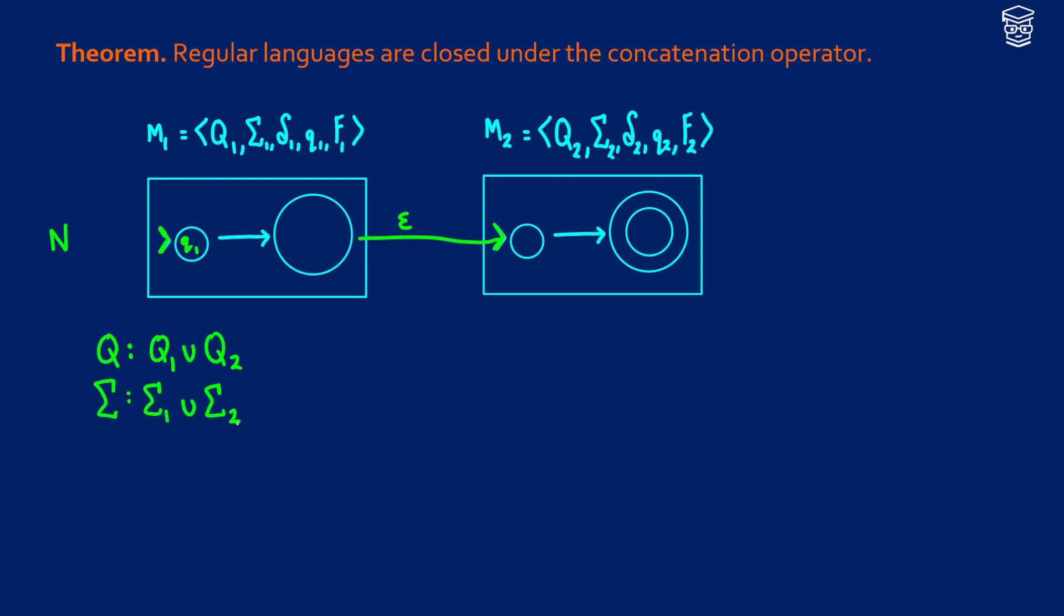We'll do the transition function last. So we're going to say Q1 is the start state. So instead of having Q1 and Q2 both be start states because Q2 would be the start state of machine 2, it's just going to be Q1.